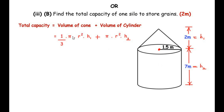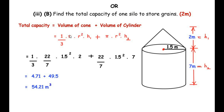Total capacity = volume of cone + volume of cylinder = (1/3)πr²h1 + πr²h2, where r is the common radius for both the cone and cylinder. Plugging in values: (1/3) × (22/7) × 1.5² × 2 + (22/7) × 1.5² × 7. Simplifying, the volume of the cone is 4.71 m³ and the volume of the cylinder is 49.5 m³. Adding these gives the total capacity of one silo as 54.21 m³.